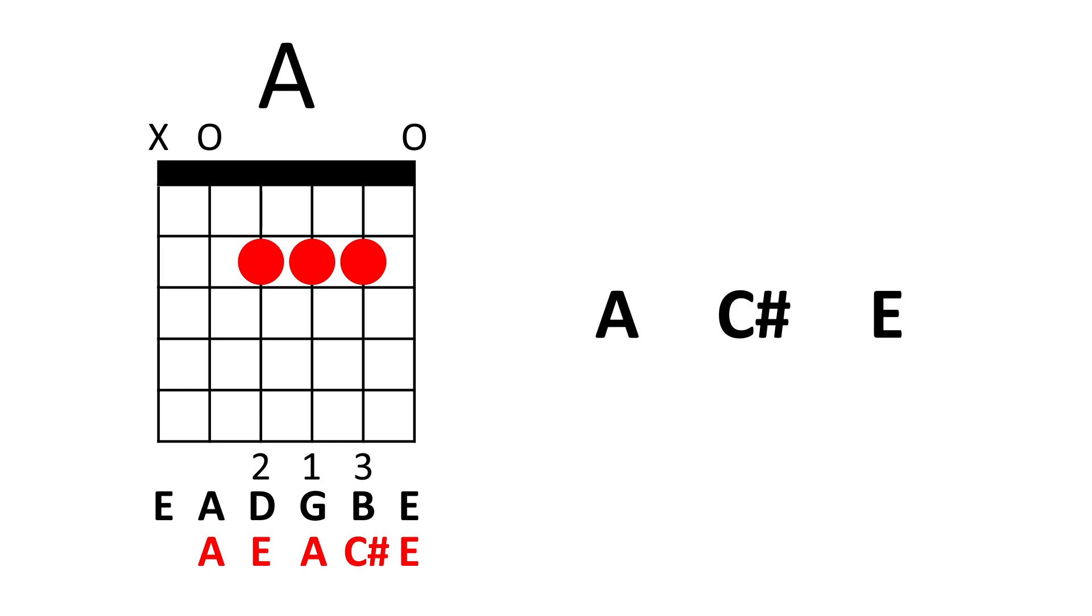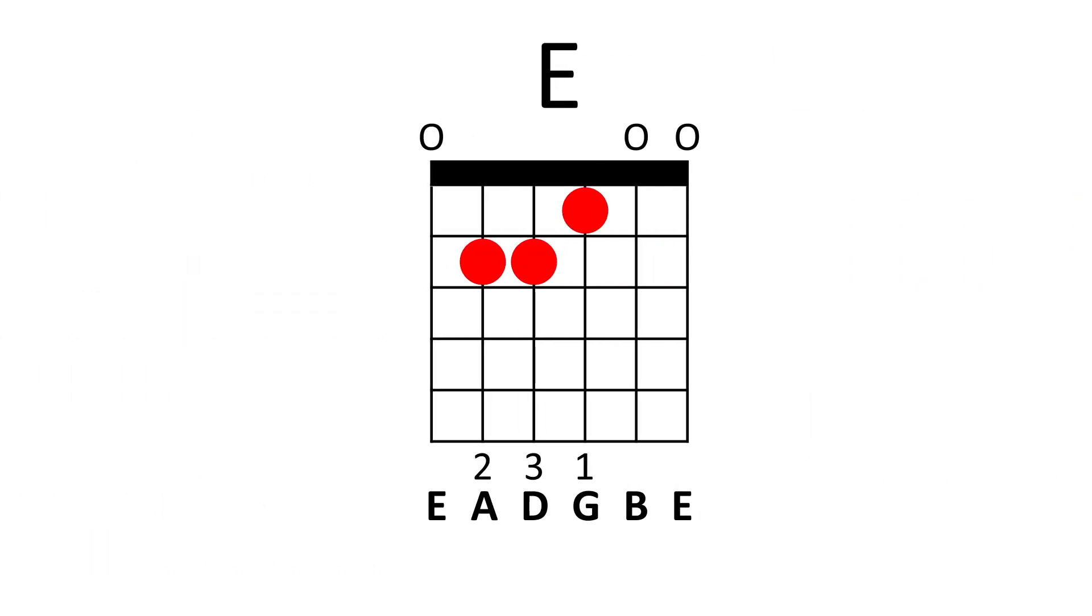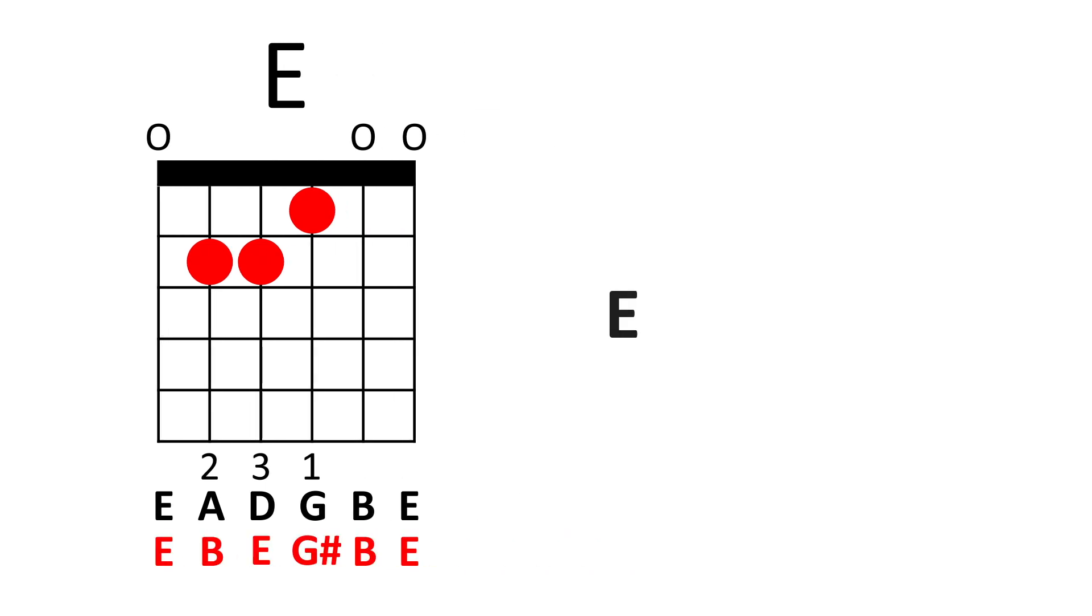The same thing can be said for the E major, so let's check out the E major. So starting on the sixth string, we have an E note. The fifth string, we have a B note. Fourth string, we have another E note. Third string, we have a G-sharp note. Second string, we have a B note. And first string, we have an E note. So for the E major chord, the only notes that we have are E, G-sharp, and B, just that some of the notes are doubled up again.